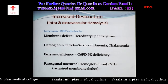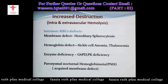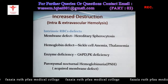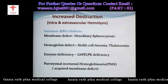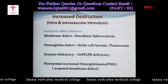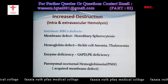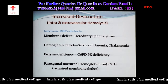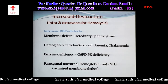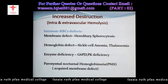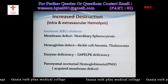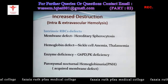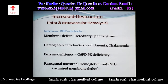Paroxysmal nocturnal hemoglobinuria is a very important acquired condition. Membrane defects, hemoglobin defects, and enzyme defects are inherited conditions, but this is the only hemolytic anemia due to an acquired membrane defect, not an intrinsic one. There are certain proteins called anchoring proteins in the RBC cell membrane which protect RBCs from damage by the complement system. When these anchoring proteins are deficient, there will be excessive hemolysis of the RBCs.